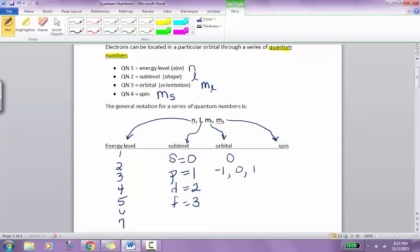If it is d, the sublevel that we're talking about, quantum number, the second quantum number would be 2. And then there are 5 orientations. So we need 5 numbers, like negative 2, negative 1, 0, 1, and 2. And finally, if we get to f, then there are 7 different orientations. So we have to back this up all the way to negative 3, negative 2, negative 1, 0, 1, 2, or 3. All those possibilities for f sublevel.